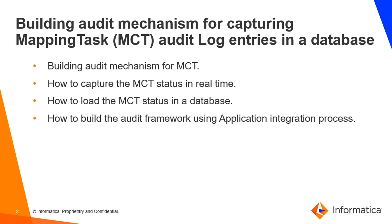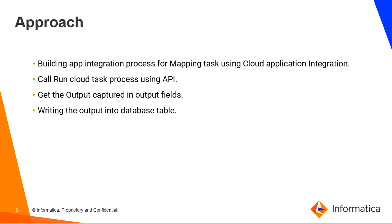To build the audit mechanism for mapping task configuration, we will talk about how to capture the mapping task status in real-time, write it into a database, and build this audit framework end-to-end using the App Integration process within the IICS platform, known as Cloud Application Integrations (CAI). The approach involves three straightforward steps: executing an API, capturing the output data into temp variables, and then writing them into the database.